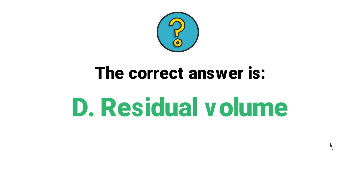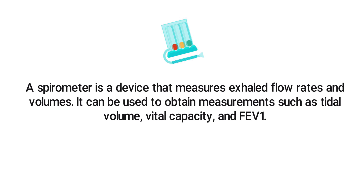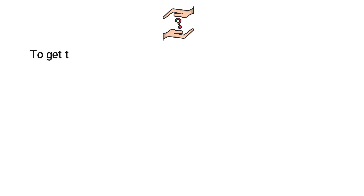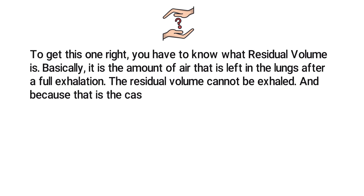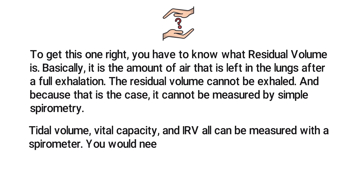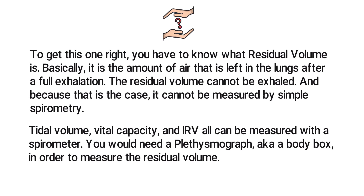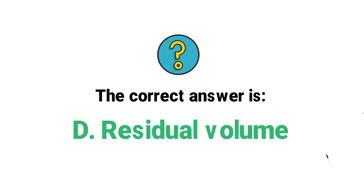The correct answer is D, residual volume. A spirometer measures exhaled flow rates and volumes and can obtain measurements such as tidal volume, vital capacity, and FEV1. Residual volume is the amount of air left in the lungs after a full exhalation — it cannot be exhaled, so it cannot be measured by simple spirometry. You would need a plethysmograph, also known as a body box, to measure residual volume.